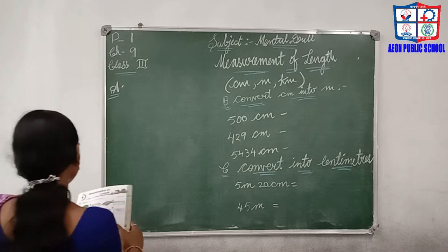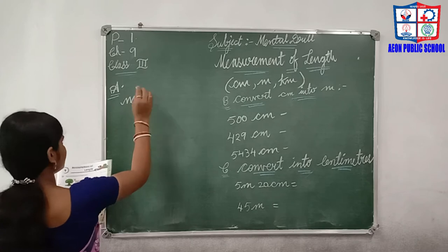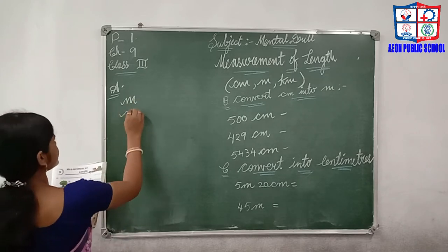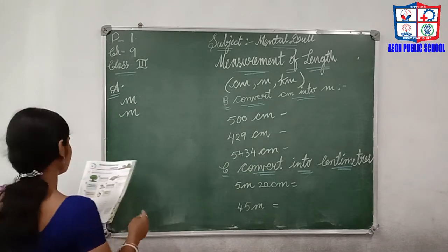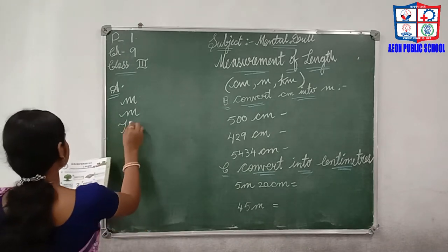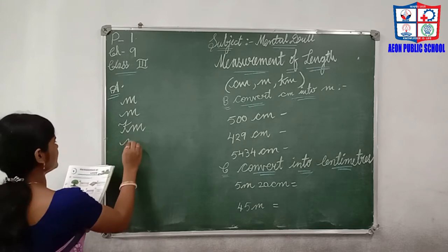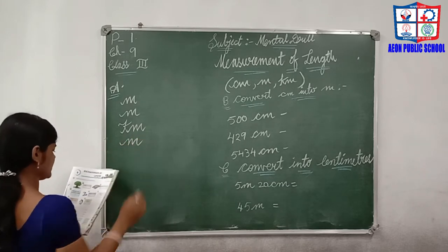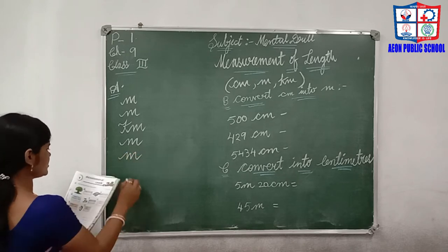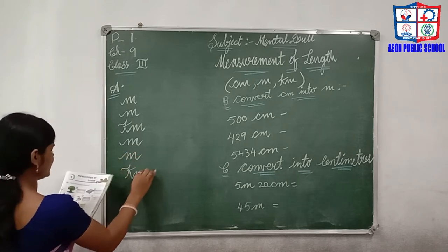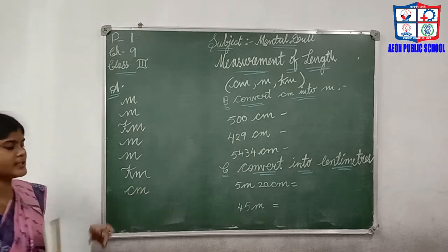Let me write these answers again. Height of a tree is measured in meters. Length of a sari is also in meters, because it is long. Distance from Chennai to Delhi is kilometers. Length of a bed and height of a building are both in meters. Distance from school to home is kilometers. And length of the earthworm is small, so centimeters.